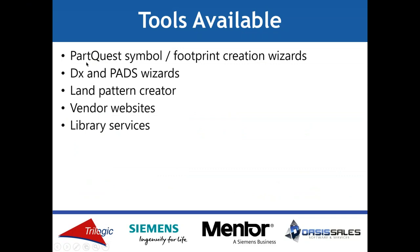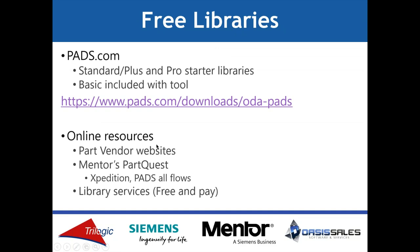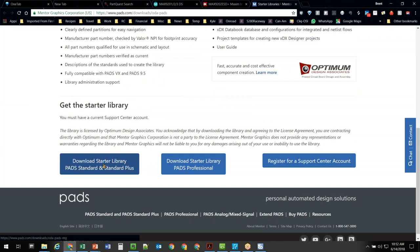There are other resources — vendors and websites you can go to. Many vendors are now supplying footprint data in various CAD tool formats. If your CAD tool format isn't available, Mentor Graphics supplies conversion tools — so if only an OrCAD symbol or footprint was available, you can download it and use our conversion tools to migrate it into our library format. For PADS customers, we do provide a pretty nice starter library you can get from pads.com — download ODA Libraries. It gives you symbols, footprints, and an Access database for you to start with as a template.